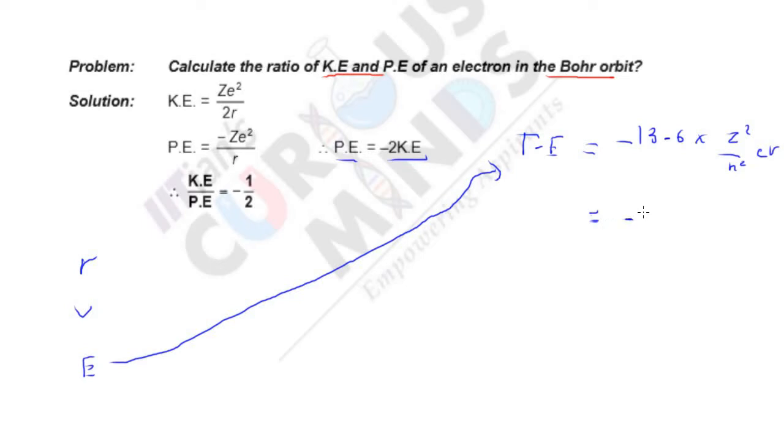It is nothing but minus Z E squared by R. Always remember, minus 13.6 into Z squared by N squared electron volt is nothing but minus Z E squared by R. This is total energy. So always remember, potential energy is always twice of total energy.